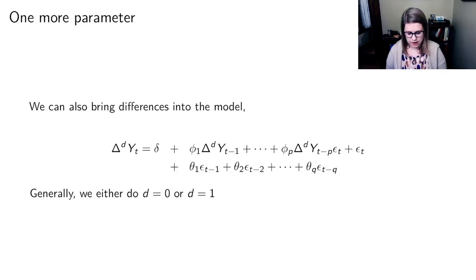If you were going to write out the notation, you would put in some delta Ds. And generally, we either do d equals zero, which is what we've been doing before, or d equal one. We don't do more differences than that.